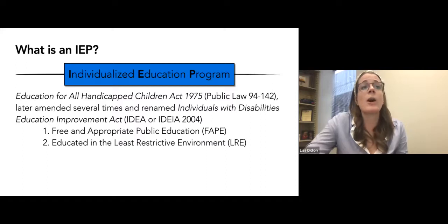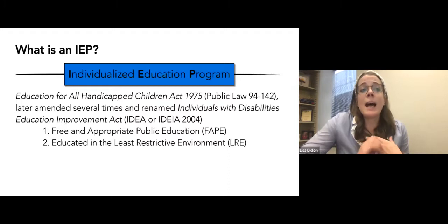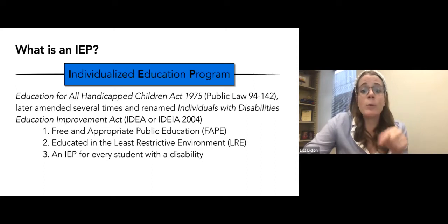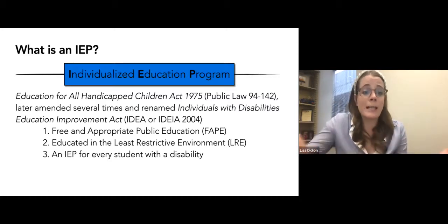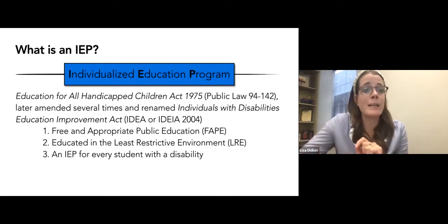Students are also to be educated in the least restrictive environment, meaning that to the greatest extent possible, the student with the disability is to be educated alongside peers without disabilities in the general ed setting. There is an IEP for every student with a disability. Schools must specify long and short-term goals based on a comprehensive assessment and the data from that assessment. The IEP must also specify whether or not the student is going to take assessments with or without accommodations.